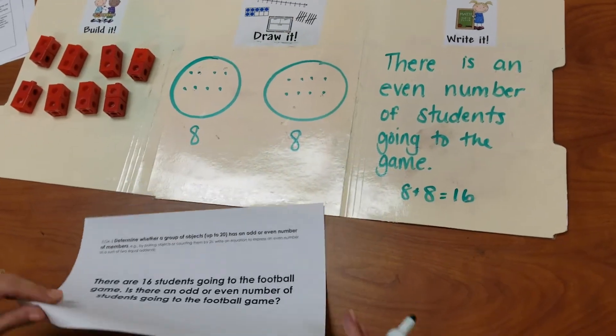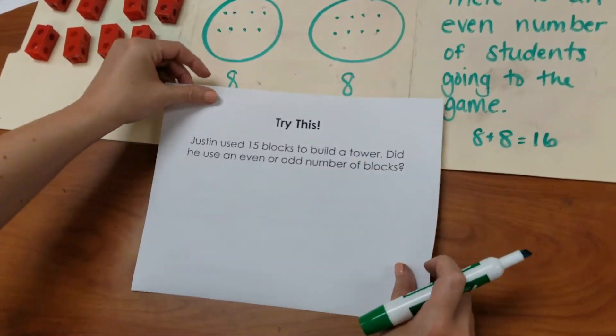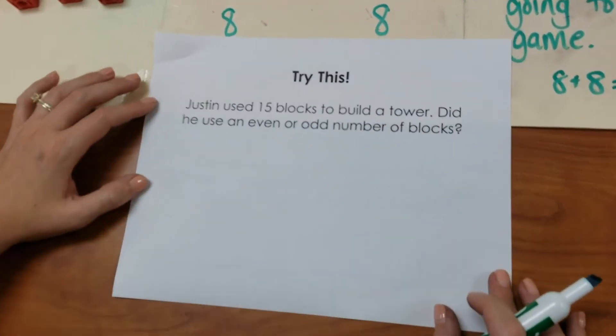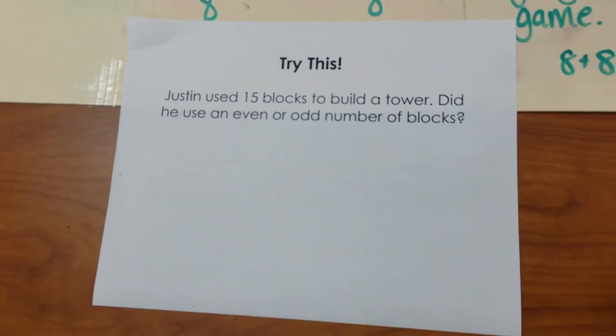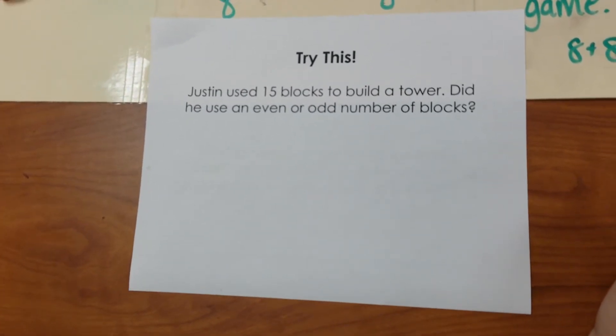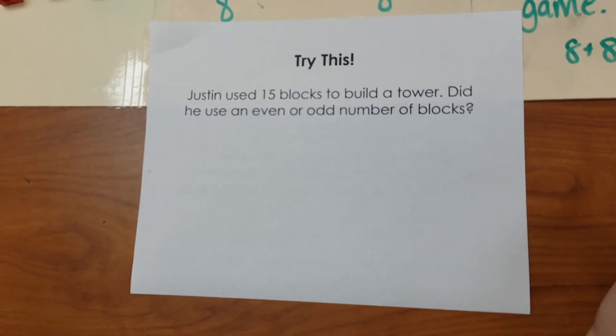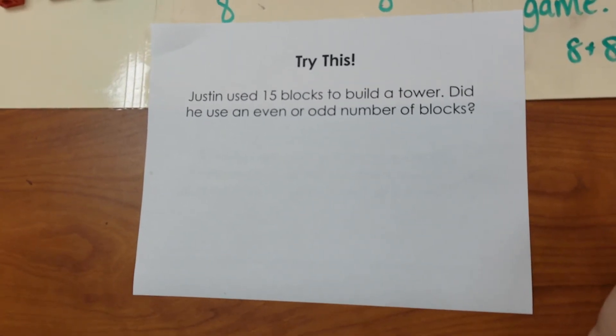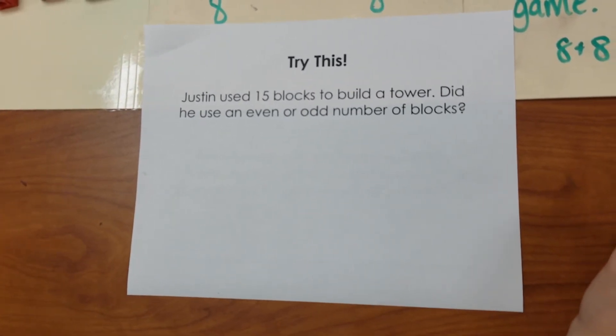Now it's your turn to try a problem. Justin used 15 blocks to build a tower. Did he use an even or odd number of blocks?